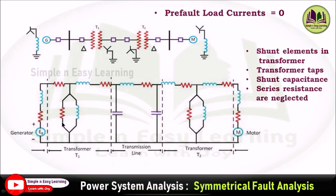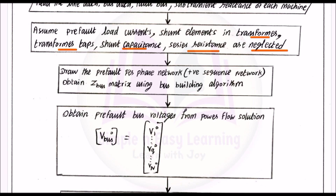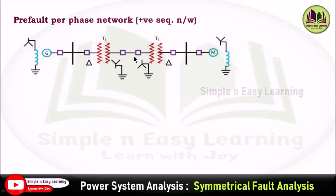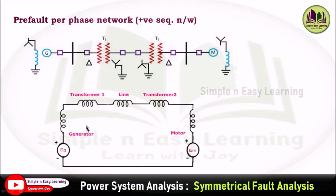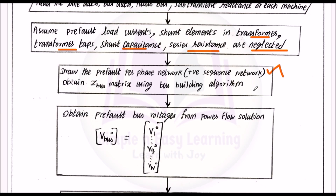In order to reduce the complexity of fault analysis, draw the pre-fault per-phase network, that is the positive sequence network. Using the positive sequence network we obtain the Z bus matrix using the bus building algorithm. For the given single line diagram, draw the reactance diagram — the positive sequence network — which consists of generator EMF and reactance, transformer reactance, line reactance, transformer 2 reactance, motor reactance, and back EMF.